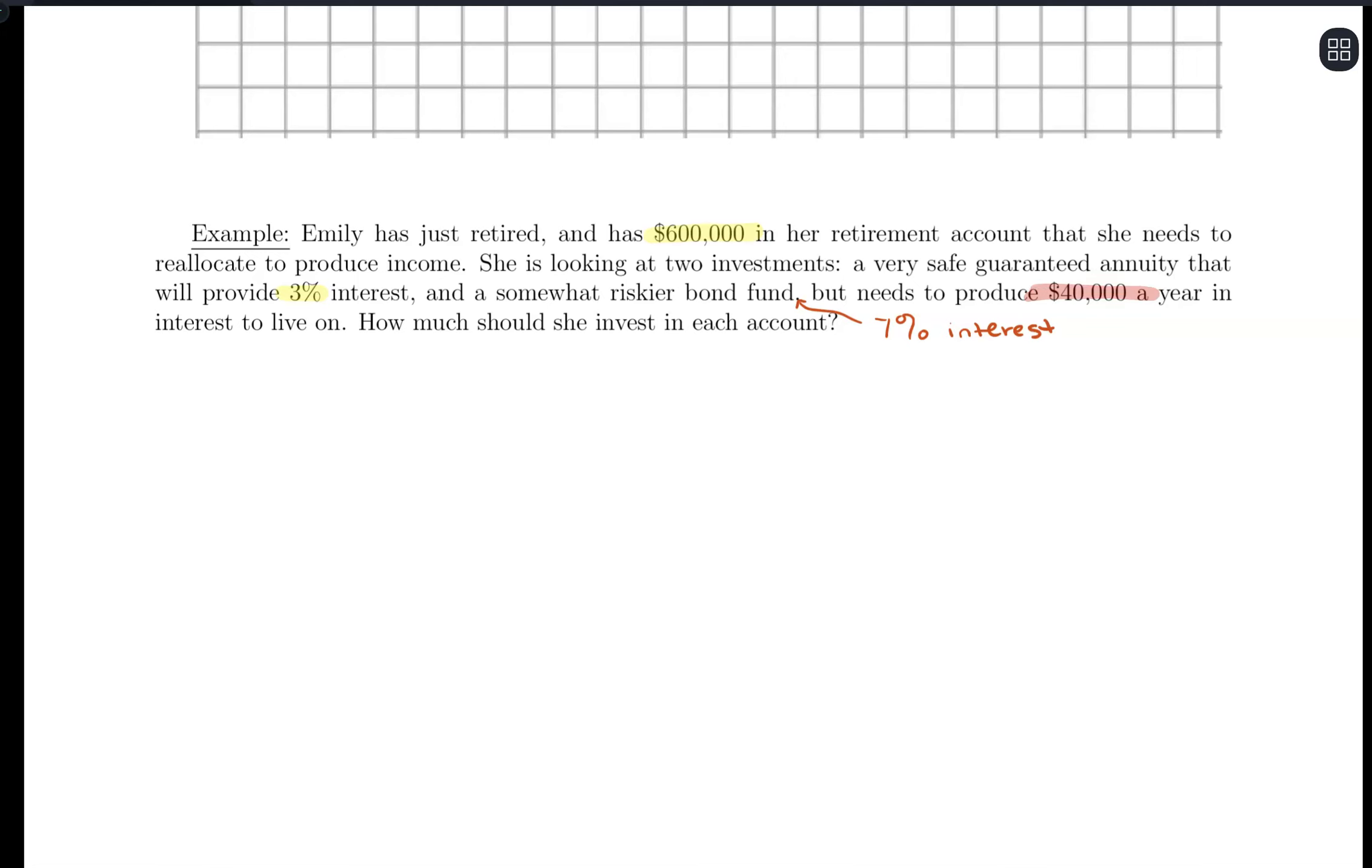And it needs to produce $40,000 a year in interest to live on. Okay, so we also know how much we need each year. So how much should she invest into each account? So we have these two accounts. We have the safe account and the risky account. Overall, we have this total investment.